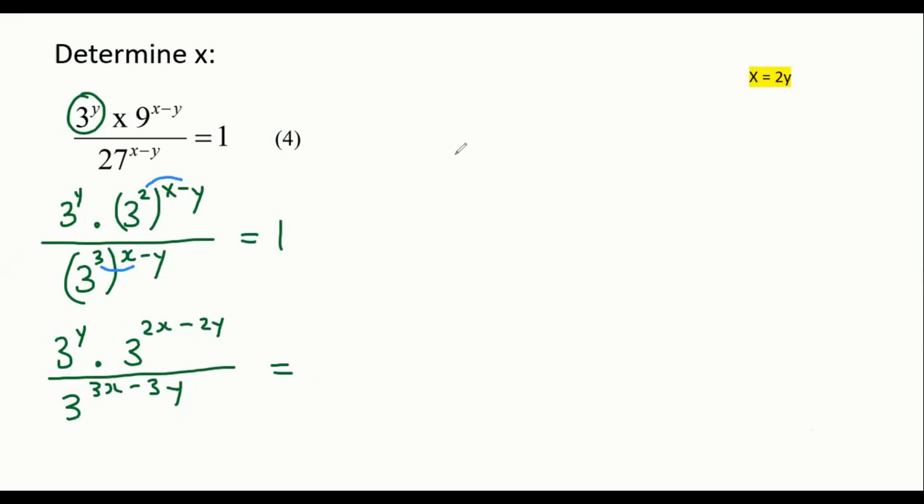Remember that if you have two things multiplied together, like 3 to the power of x and 3 to the power of 2, that does not become 9. It rather becomes 3 because the bases stay the same, and then you add the exponents. So let's quickly see what happens now. It doesn't become 9 or anything like that.